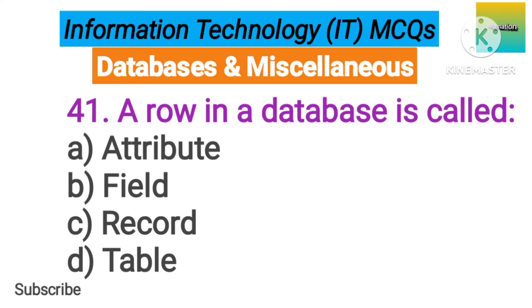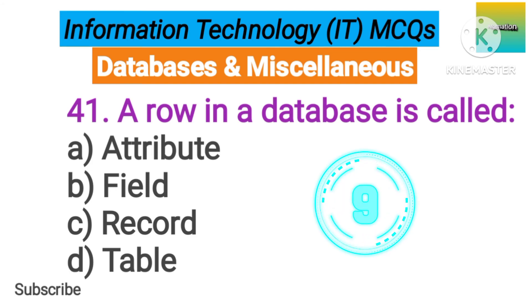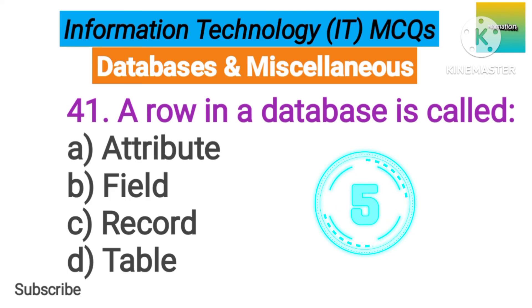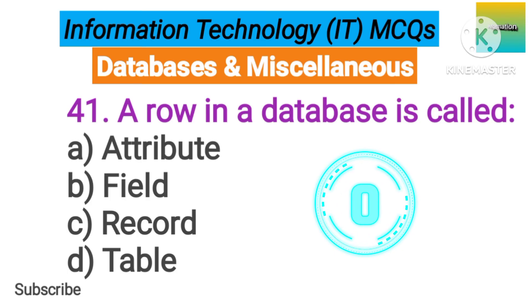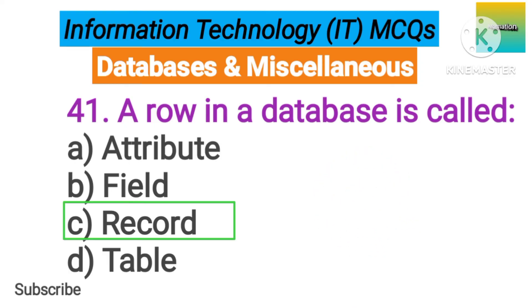Databases and Miscellaneous. Number 41. A row in a database is called option A: Attribute. B: Field. C: Record. D: Table. The correct answer is option C, Record.